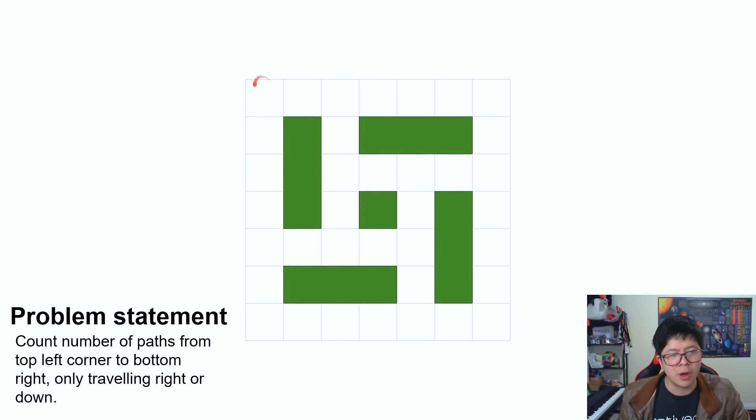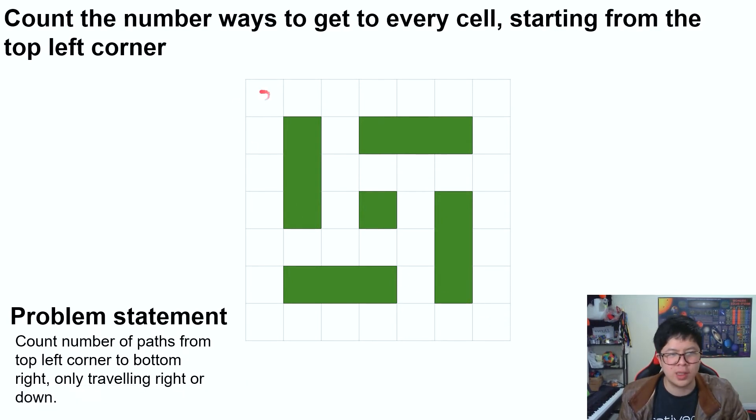So we're only asked to find the number of ways to get from here to here, but what we're going to do instead is count the number of ways to get from here to every single other cell in this grid.